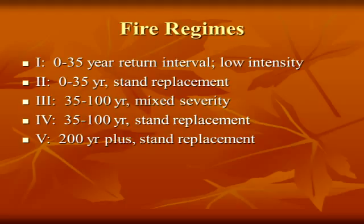A fire regime two is that same zero to 35-year return interval, but it's a stand replacement fire. In grass systems, when you burn a grass system, that's a stand replacement fire — you're actually taking off the whole top layer and it's going to come back from sprouts. Then you get a fire regime three, and a lot of southeast types are that. It's 35 to 100 years, mixed severity. You get some low-intensity fire and some stand replacement — it's blowing holes in the canopy in places and crawling in others.